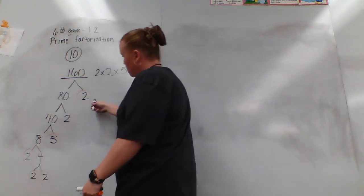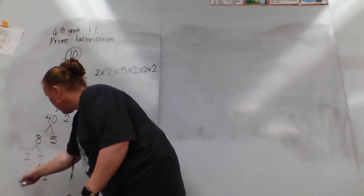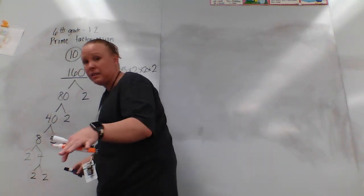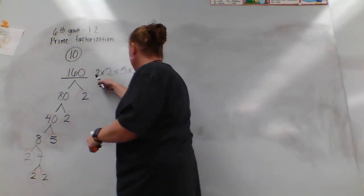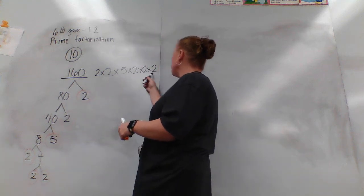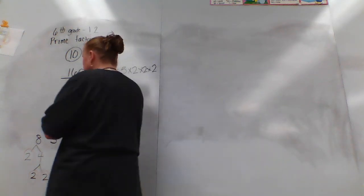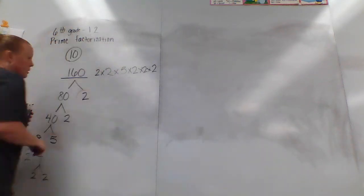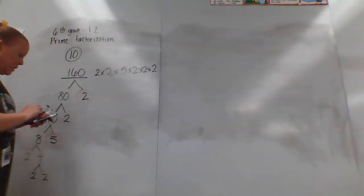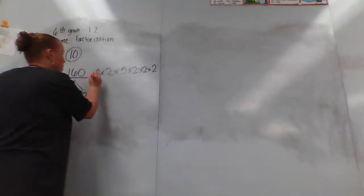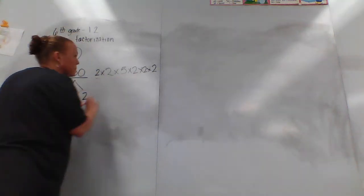So counting up: 1, 2, 3, 4, 5 sets of 2, and then a 5. That's your whole answer for that one.